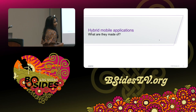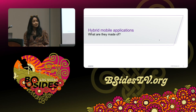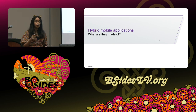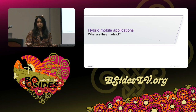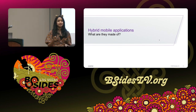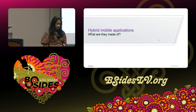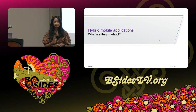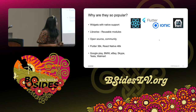A hybrid mobile application is one you code and build once and can release for multiple platforms — not just mobile OSes, but also Linux, macOS, or web browsers. This is made easy by frameworks like Cordova, Ionic, Flutter, and React Native. According to recent statistics, a lot of retail applications in the market right now are built through one of these frameworks.